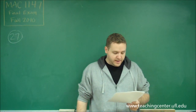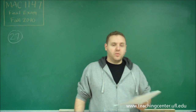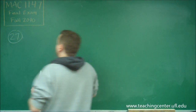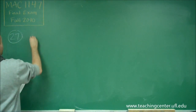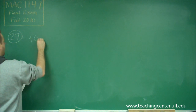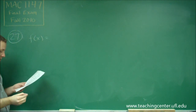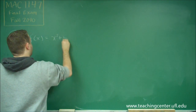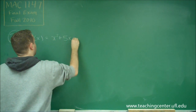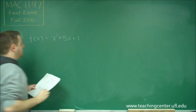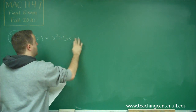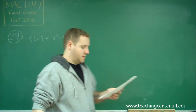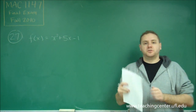For number 7, we're asked to find the range of a quadratic function. Our function is f of x equals x squared plus 5x minus 1, and we need to find the range.